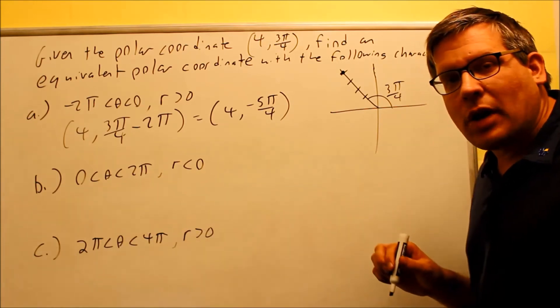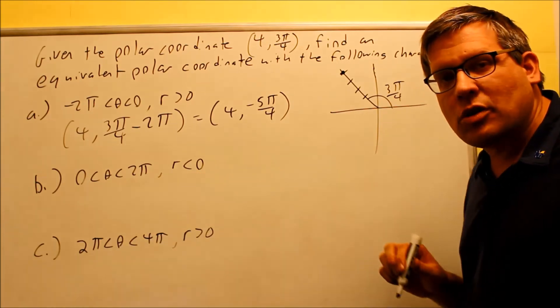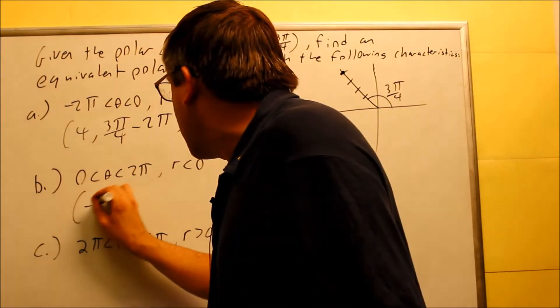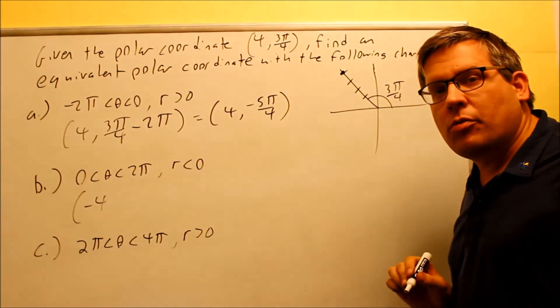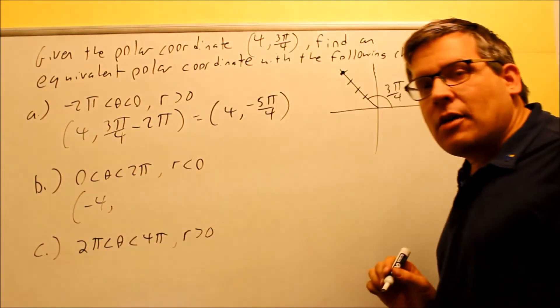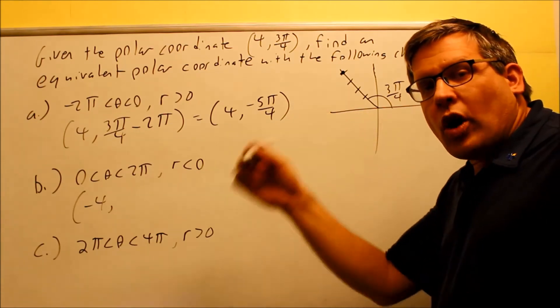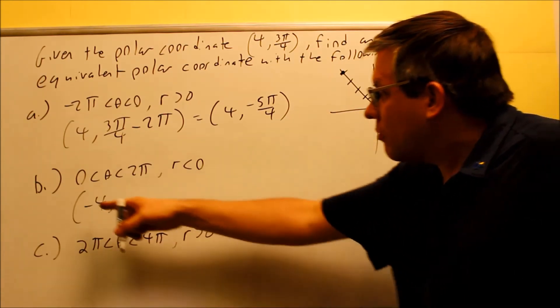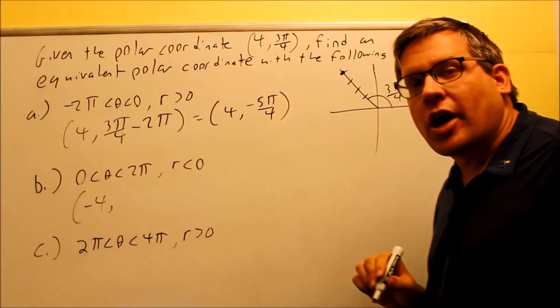The next one, my angle needs to be positive, but my r has to be less than zero. In this case, I do have to change the sign of the r. It was positive 4, and I want to make it negative 4. If I'm making it negative 4, that means I have to use π. I can either add or subtract π this time because I want to make that from a positive 4 to a negative 4.